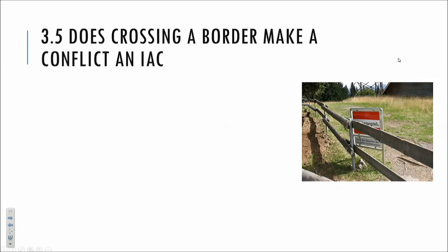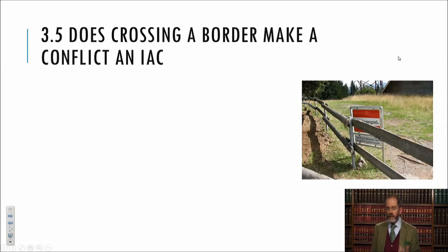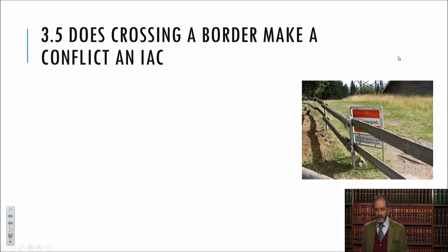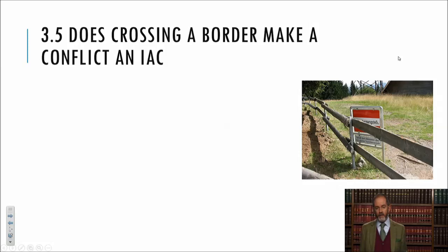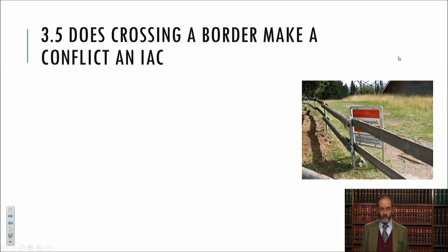If crossing a border is enough to make the rules of international armed conflict apply, that might have good or bad results. One might argue — as the International Committee of the Red Cross does — that the highest standards of international armed conflict should apply whenever possible because they provide more protection and subject warring parties to more discipline. On the other hand, the law applicable to international armed conflict includes GC 3 on prisoners of war, and we'd suddenly be asking rebel groups — possibly groups without stable territorial control — to administer prisoner of war camps. How do we encourage respect for the law if we hold people to impossible standards?